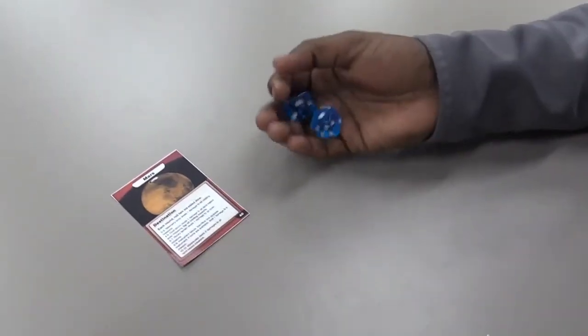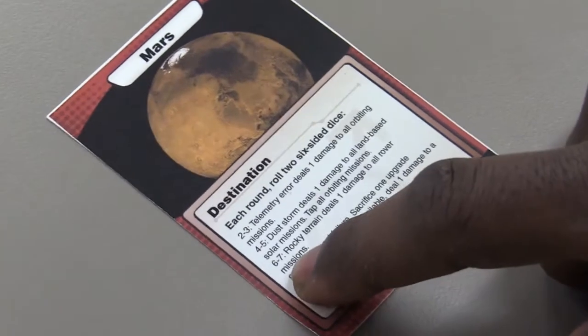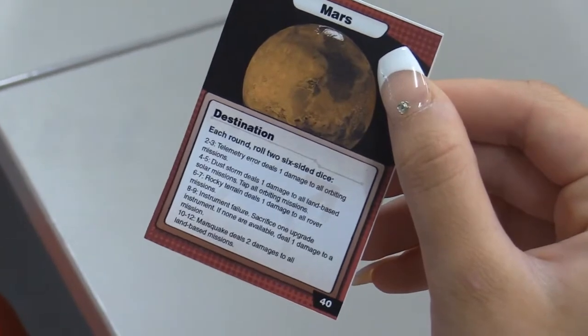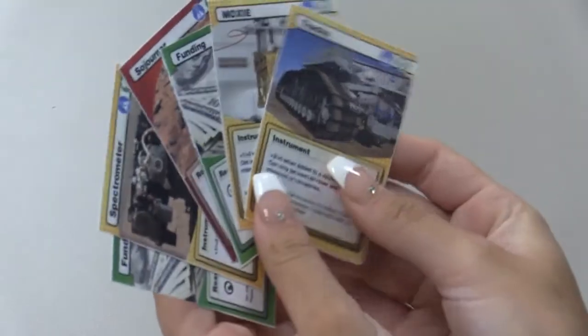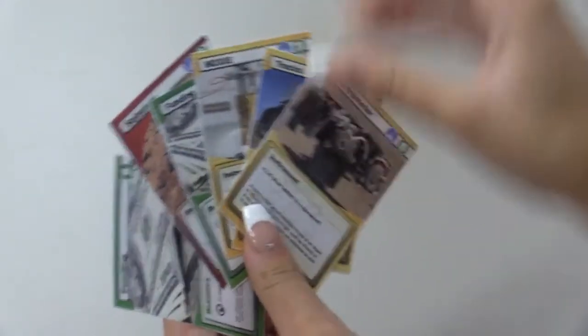Each turn, the destination card will present a series of challenges to your spacecraft based on the number rolled on the dice. The number rolled determines the event that players must overcome using their available spacecraft and instruments. Destination cards should stay separate from the rest of the cards.